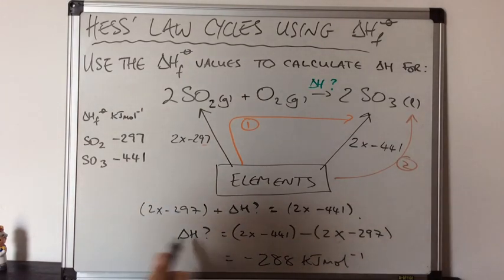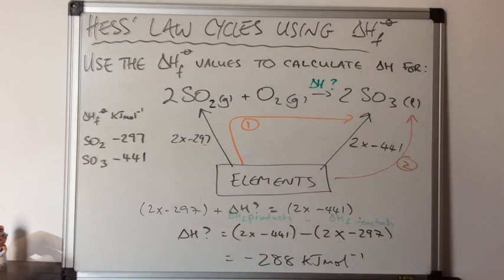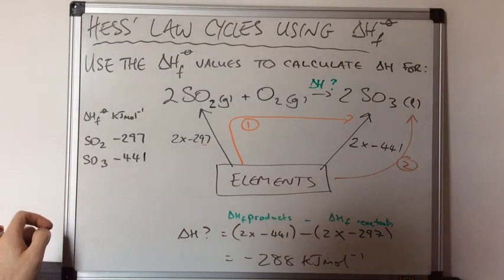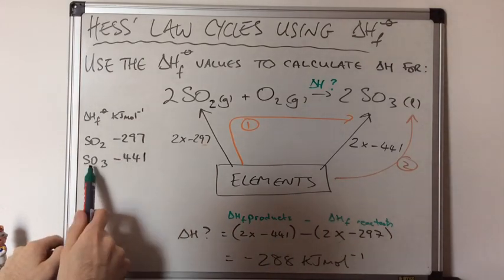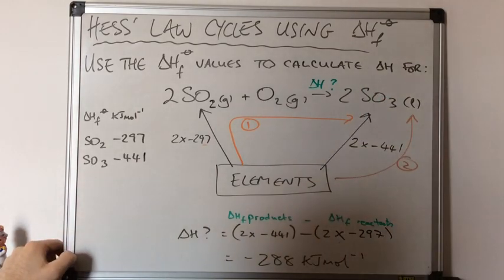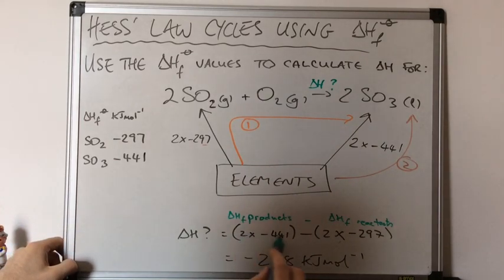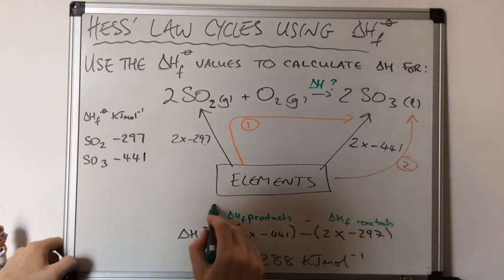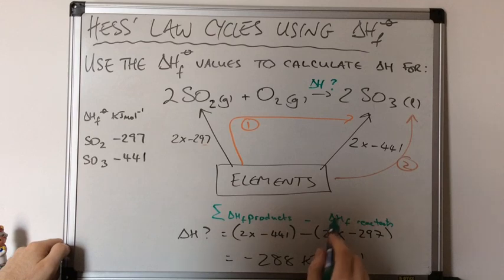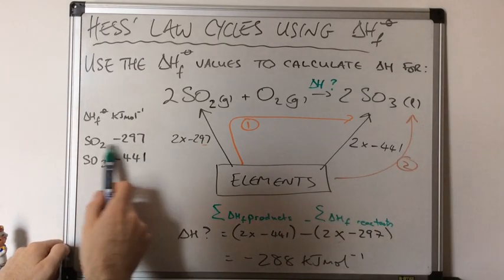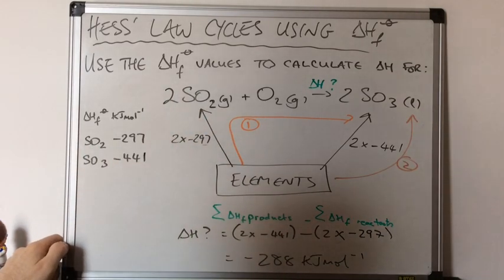Looking at this in a bit more detail: the minus 441 was to do with sulfur trioxide, which was the only product in the reaction. So essentially this term is the sum of the enthalpy changes of formation of the products. From that we subtracted the sum of the enthalpy changes of formation of the reactants — the minus 297 was to do with SO₂, which was a reactant.